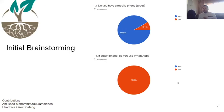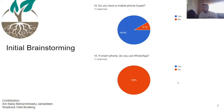Our solution requires farmers to have a smartphone to take a photo. We asked if they had any mobile phone, and 90% said yes, but 1% said no. Critically, when we asked if it was a smartphone with access to WhatsApp to send pictures for analysis, all of them said no. This was a major bottleneck we needed to address.